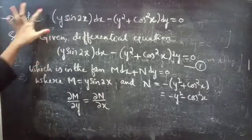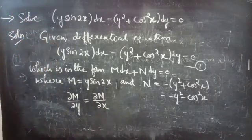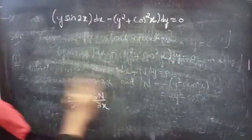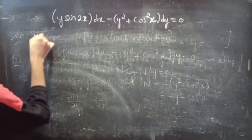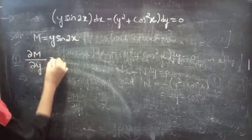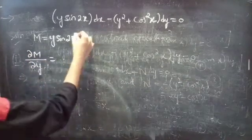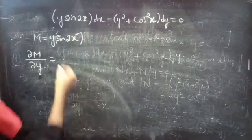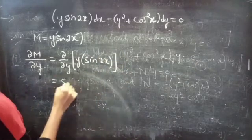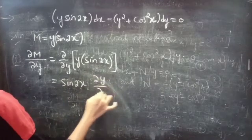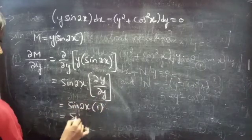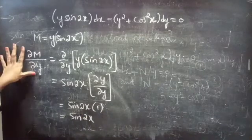If the partial derivative of M with respect to y is equal to the partial derivative of N with respect to x, then the given equation is an exact equation. We have M equals y sin 2x, so the partial derivative of M with respect to y: treating y as variable, we get derivative of y with respect to y is 1, giving us sin 2x times 1, which is sin 2x.